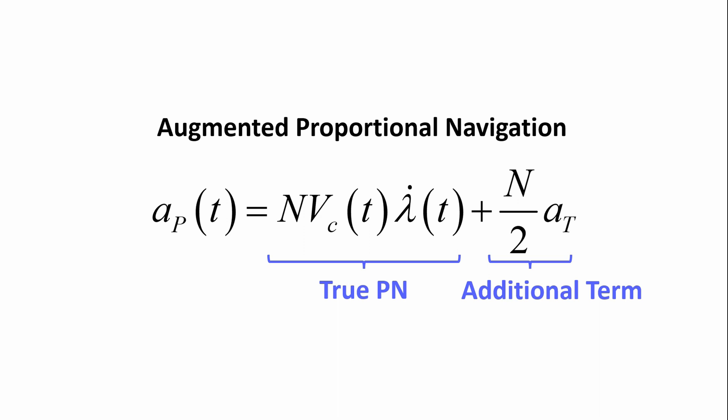As we've shown in previous modules, this law is optimal for a constant accelerating target.